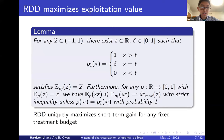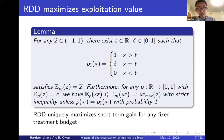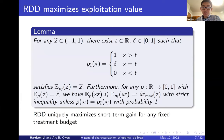The first formal result, alluded to by Tim, says this: if you fix the fraction of subjects you're treating — say 20% or 70% — then among all treatment assignments attaining that treatment fraction, the RDD will maximize the short-term gain criterion E of xz. This should be intuitive: if you can only treat 30% of subjects and want to maximize gain, just give treatment to the top 30%. The RDD uniquely maximizes gain, and this is independent of the underlying distribution of the running variable x.